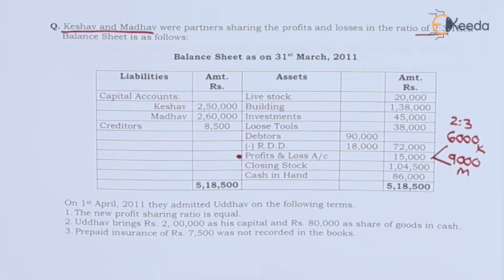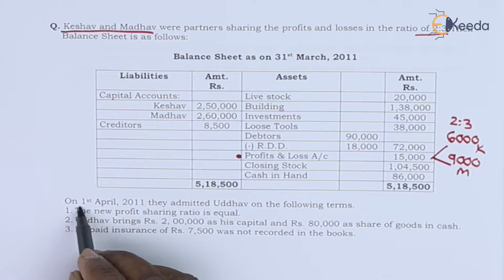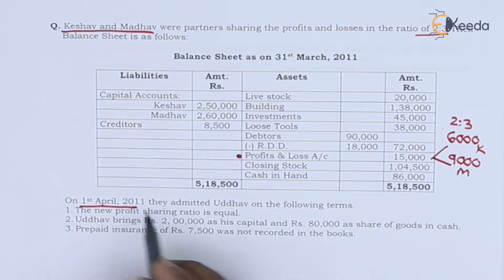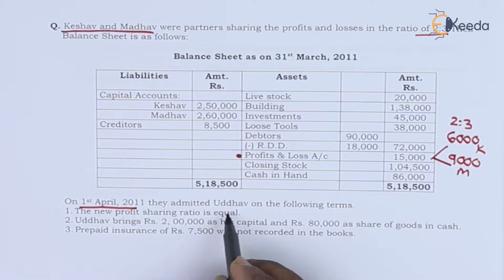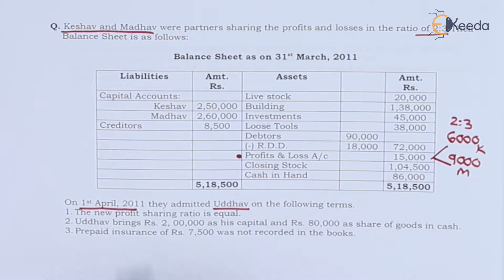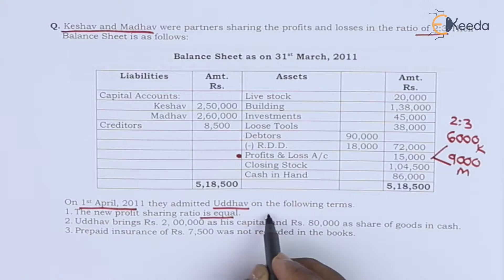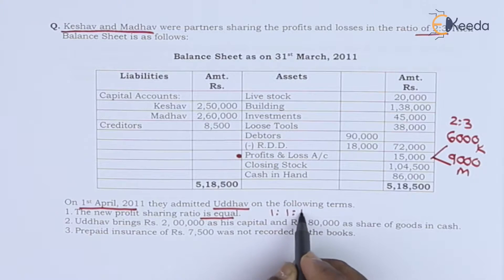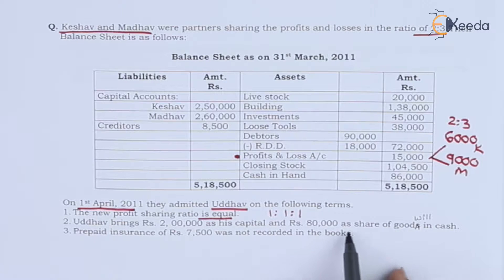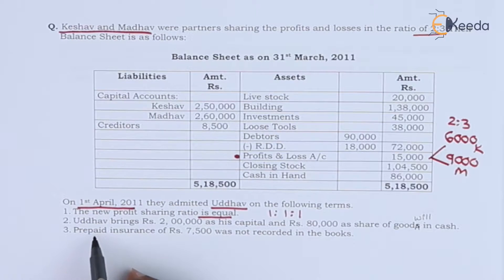On 1st April 2011, they admitted Uddo on the following terms. The new profit sharing ratio is equal — 1:1:1. Uddo brings 2 lakhs as capital and 80,000 as his share of goodwill, both in cash.